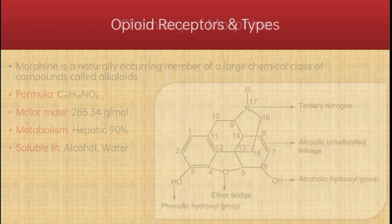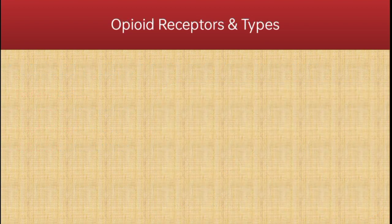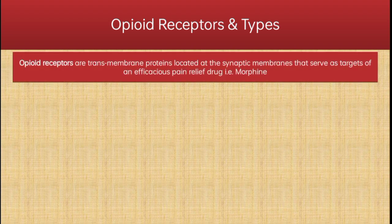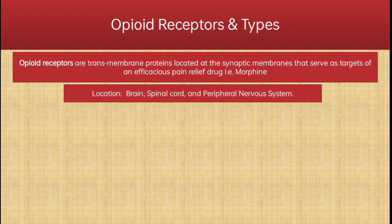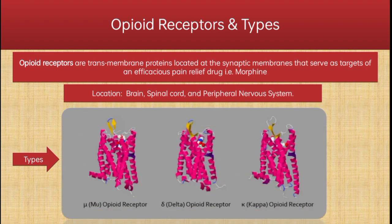Before moving towards the pharmacology, let us study the opioid receptors and their types. Opioid receptors are transmembrane proteins located at the synaptic membrane that serve as targets of an efficacious pain relief drug, i.e., morphine. These are special types of receptors called G-protein coupled receptors. They are present in the brain, spinal cord, and peripheral nervous system. There are three types of opioid receptors: Mu opioid, Delta opioid, and Kappa opioid receptors.